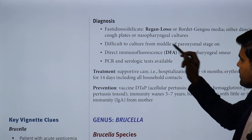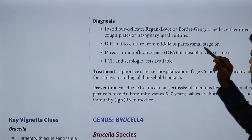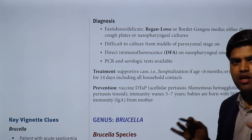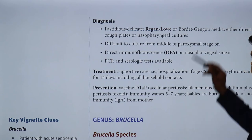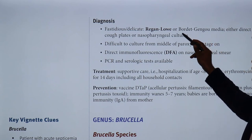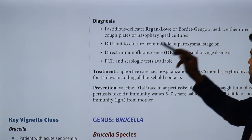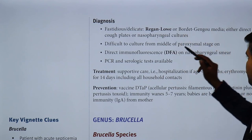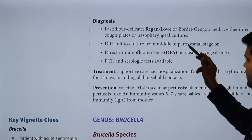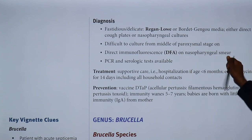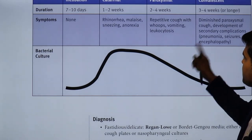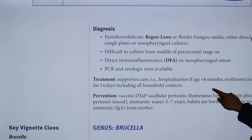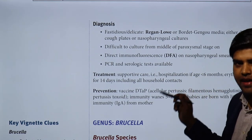Diagnosis: we have to understand that this organism is fastidious and delicate. They can grow under Regan-Lowe media or Bordet-Gengou media. If they ask you where we can grow this Bordetella pertussis organism, you have to think of Bordet-Gengou media. Bordetella pertussis was named from this scientist Bordet. Either direct cough plates or nasopharyngeal culture can be used. It is difficult to culture from the middle of the paroxysmal stage onwards. Direct immunofluorescence and nasopharyngeal smear can be done. PCR and serological tests are also available.